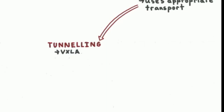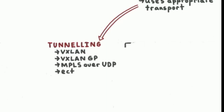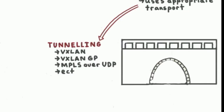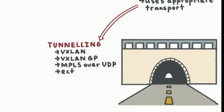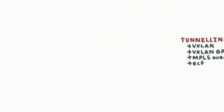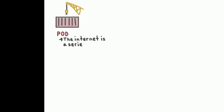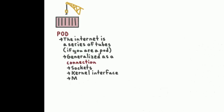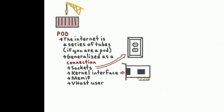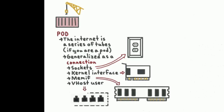When I say it gets there over a connection, this is whatever mechanism is used to transport that Ethernet frame or IP packet — this is never going to be riding on top of TCP. It's going to be something like VXLAN, VXLAN GP, MPLS over UDP, etc. If you were a pod, the internet is a series of tubes. Those tubes might be sockets at the TCP layer, or if the thing you're interested in is L2 frames or L3 packets, it could be a network interface or some other interface substitute like memif, vhost-user, etc. We generalize all that into the concept of a connection between a pod and a network service implementation.